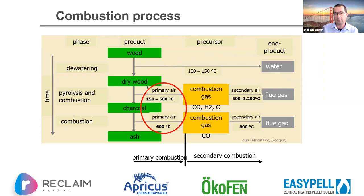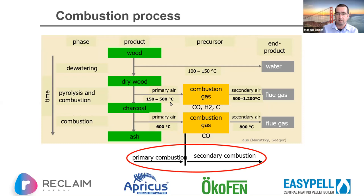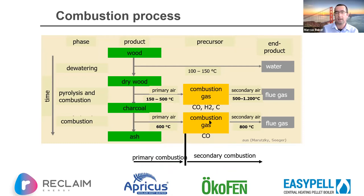As combustion phases through from dry wood through charcoal and then to ash, this isn't the air temperature — it's the temperature of the combustion phase. We're adding primary air to achieve those temperatures, and then you're moving into a secondary combustion phase where gases are burnt off at much higher temperatures.